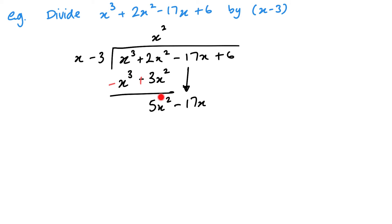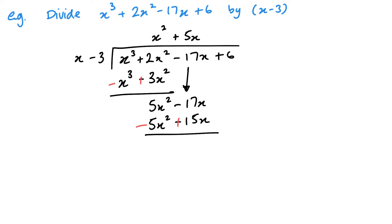I start the same process again: take 5x squared and divide by x, giving me 5x. Then I take 5x multiplied by x to get 5x squared, and 5x multiplied by negative 3 gives negative 15x. These will always cancel out — change the sign and add. So we get 0 for the 5x terms, and negative 17x plus 15x gives negative 2x. Bring down the final plus 6.